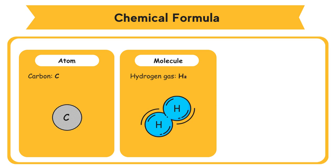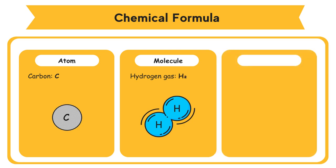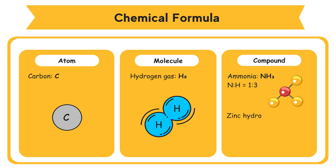Hydrogen gas H₂ is made up of two hydrogen atoms. For compounds: Ammonia, NH₃, contains nitrogen and hydrogen with a ratio of N to H equals 1 to 3. Zinc Hydroxide, Zn(OH)₂, contains zinc, oxygen, and hydrogen with a ratio of Zn to O to H equals 1 to 2 to 2.